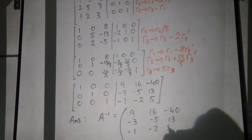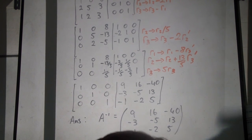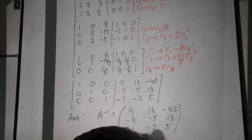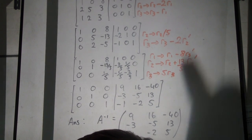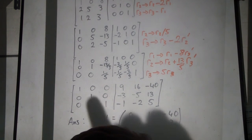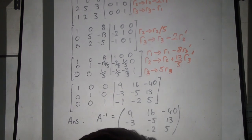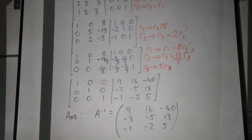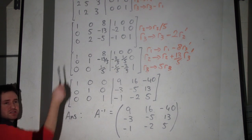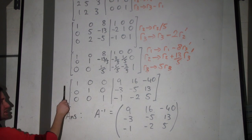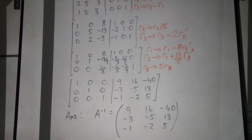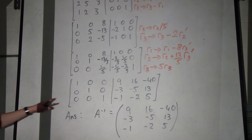To kill the 8 in row 1: 1 minus 8 times 0 is 1; 0 minus 8 times 0 is 0; 8 minus 8 times 1 is 0; 1 minus 8 times minus 1 is 9; 0 minus 8 times minus 2 is 16; 0 minus 8 times 5 is minus 40. We're finished with Gaussian row operations — this here is the inverse. Your answer is A inverse equal to this matrix. Multiply that by the original and you should get the identity.